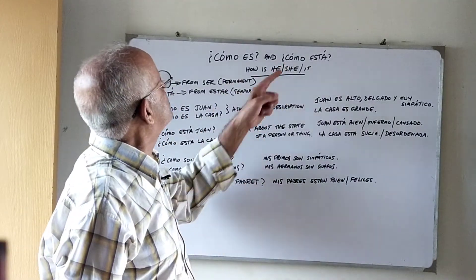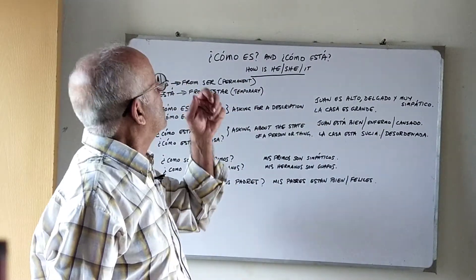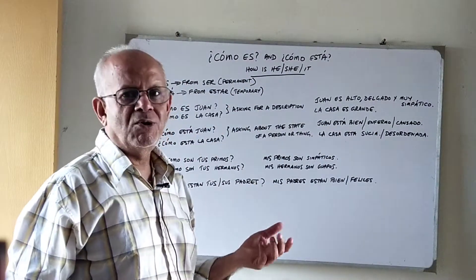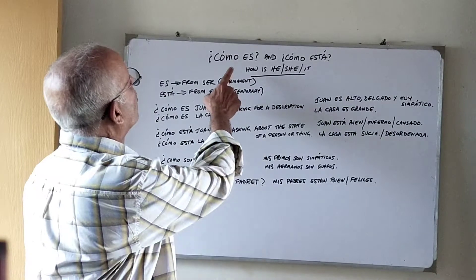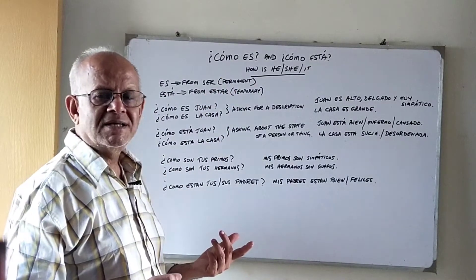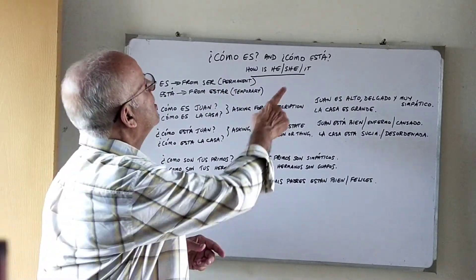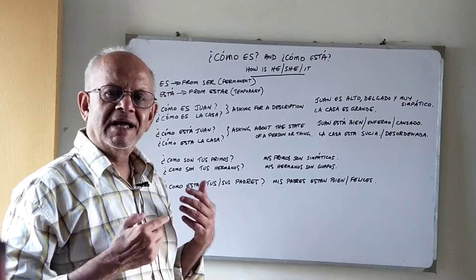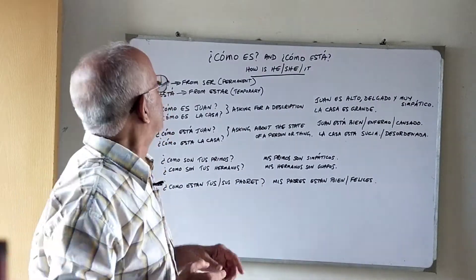Both these questions mean 'How is he?', 'How is she?', or 'How is it?' — Cómo es? means 'How is it? How is she? How is he?' and Cómo está? again means the same: 'How is he? How is she? How is it?'